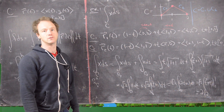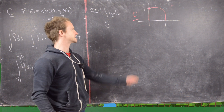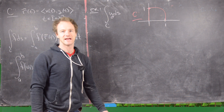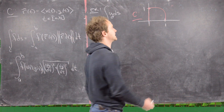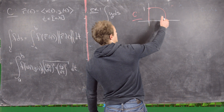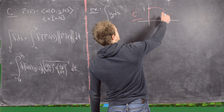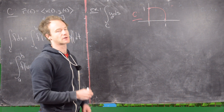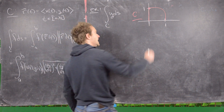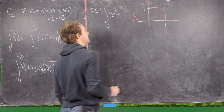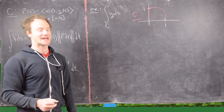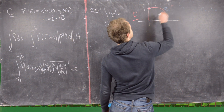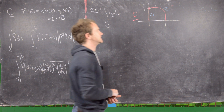For our next example, we'll do the line integral over the curve C of y ds, where C is a unit circle arc going from (1,0) to (0,1), and then a line segment from (0,1) down to the origin. I'll call the arc C1 and the line segment C2.